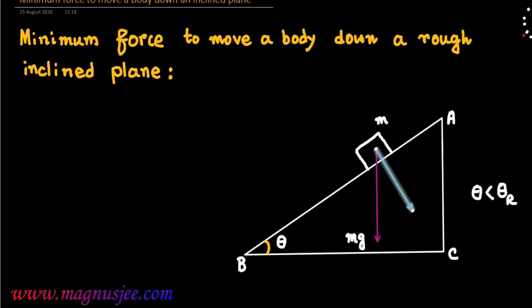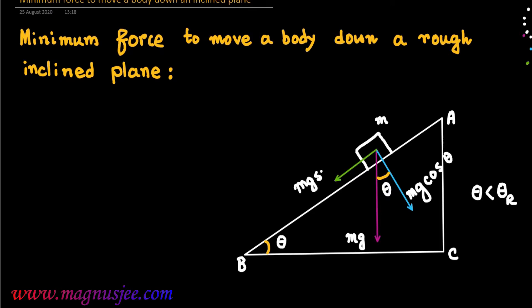Mg is resolved into two rectangular components. One component is Mg cos theta, which acts perpendicular to the inclined plane AB. The other rectangular component is Mg sin theta, which acts down the inclined plane AB from the center of gravity of the body.